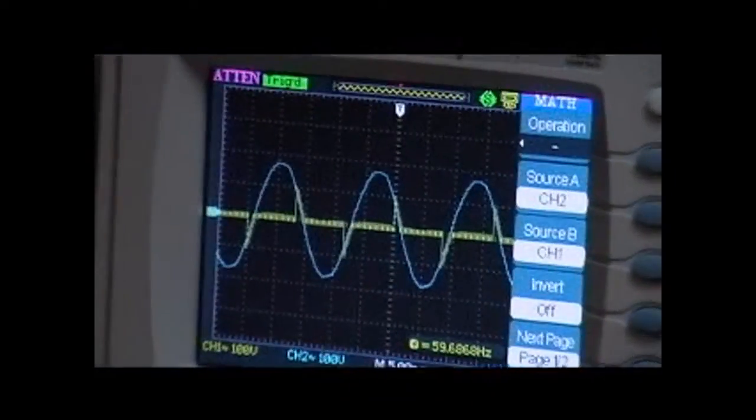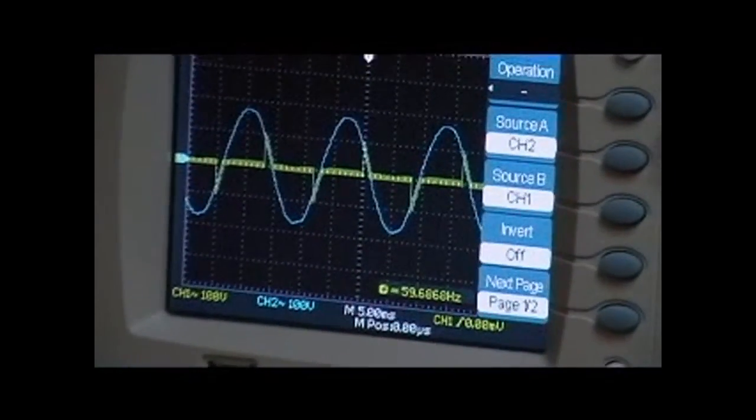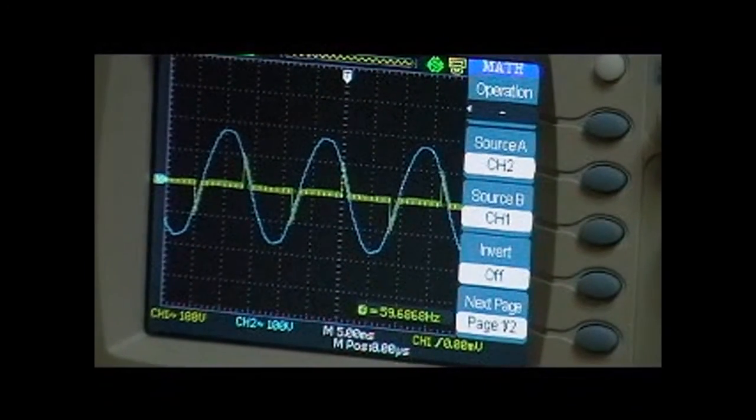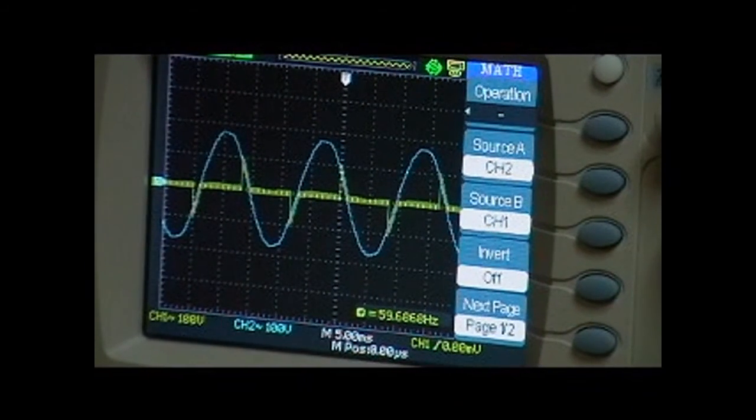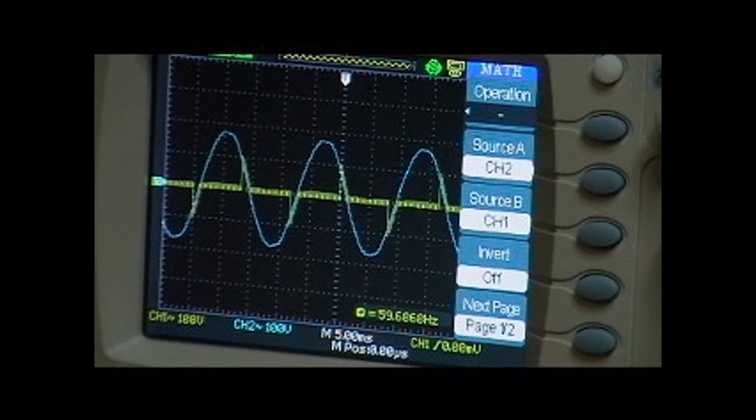So right now you'll see the blue line. This is the 360 degree waveform, 60 Hertz. The yellow is the voltage across the load, or basically the voltage at the point which the load is seeing something.